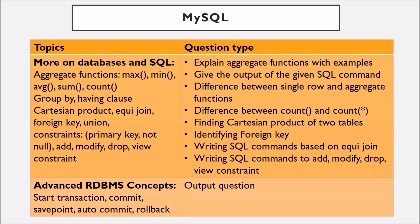From the topic More on Databases and SQL, please revise all the aggregate functions, Group By and Having Clause, Cartesian Product, Equi Join, Foreign Key, Union and the Constraints, Primary Key and Not Null, how to add, modify, drop and view constraints. The question types are given here. You can see the different type of questions which can be asked in the exam.